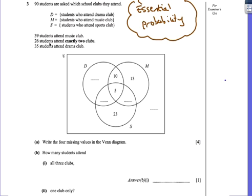So the first thing we need to notice is, let's have a look at this one. 39 students attend music club, music club is this circle here, so therefore we can find what this missing number is. Just do 39 take away 13, take away 10, take away 5, so that'll fill in this one.